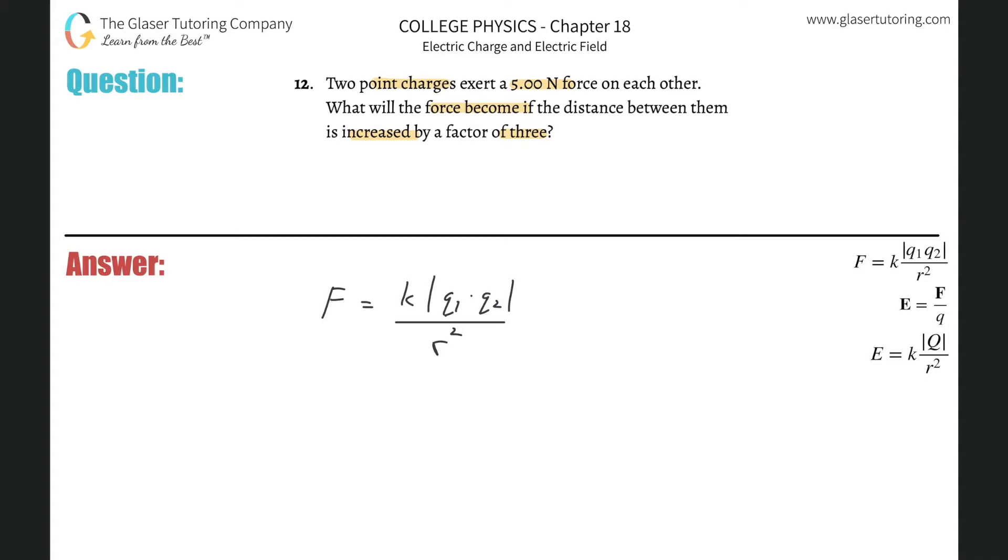So basically what we have here is in this particular case, they're telling us that we're going to increase the distance between them by a factor of three. So I can set up a whole ratio thing and do it, it's not even necessary. What happens when r goes up by a factor of three? All you have to do is literally just plug in three there for r.